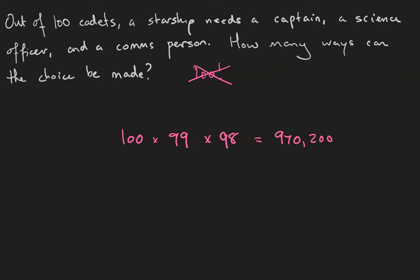What if we took the total number of ways to arrange all 100 cadets? And then we thought to ourselves, we don't care about the way that 97 of those cadets are ordered because I'm only taking three of them. The other 97 can be ordered however they want.